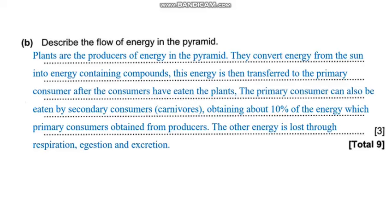In summary: plants are the producers of energy in the pyramid. They convert energy from the sun into energy-containing compounds, which is then transferred to the primary consumers after they eat the plants. The primary consumers can also be eaten by secondary consumers, who obtain about 10% of the energy that the primary consumers obtained from producers. The other 90% of the energy is lost through different processes such as respiration, egestion, and excretion.